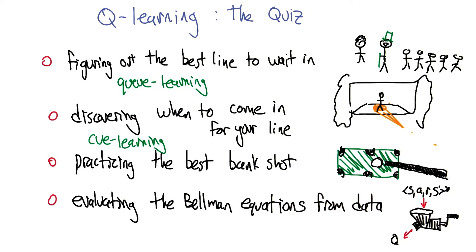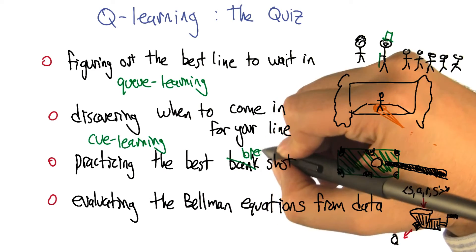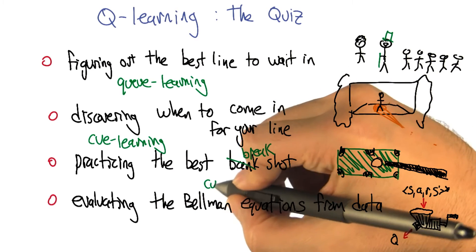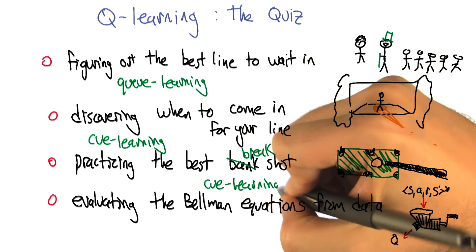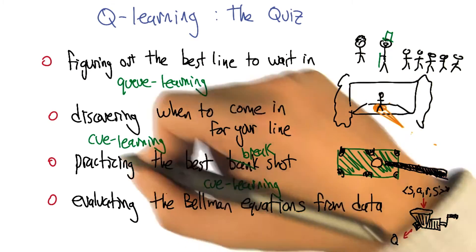The third, practicing your best bank shot, although I probably would have said break shot. Ooh, nice. That is also Q learning. And it's the same spelling. It's the same spelling. That's unfortunate. Well, you pronounce one Q and you pronounce the other one Q. Yes, well, clearly. But I, and I spelled them that way, too.